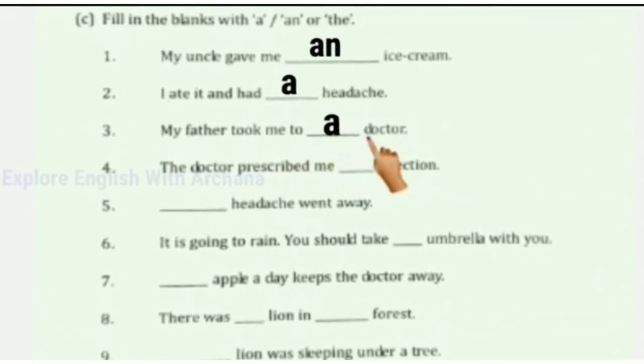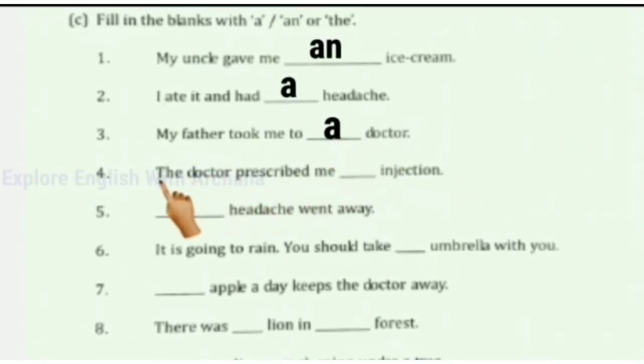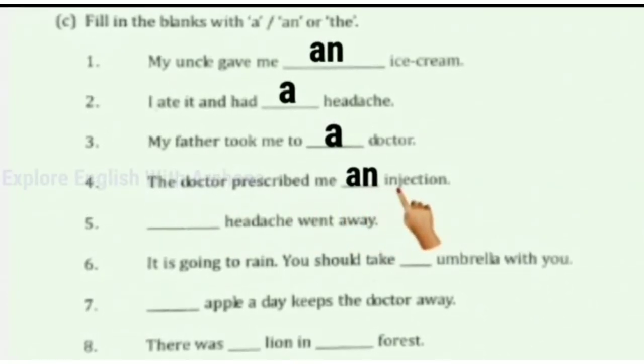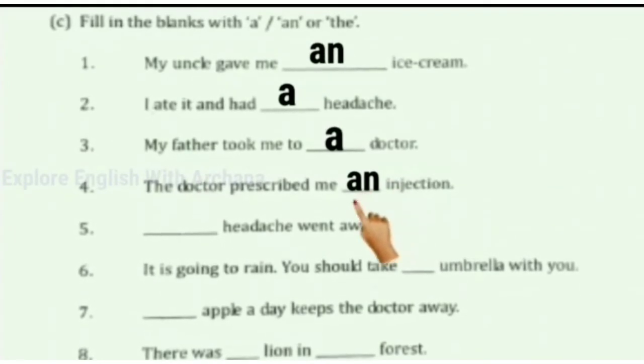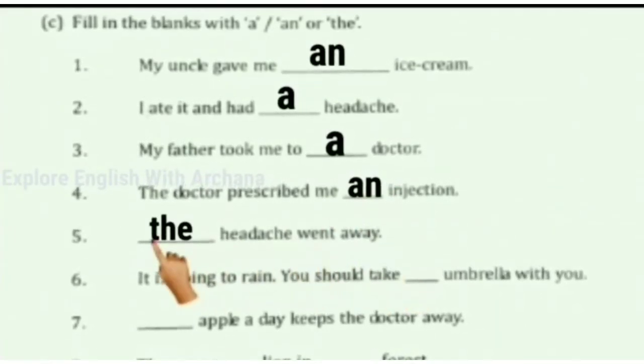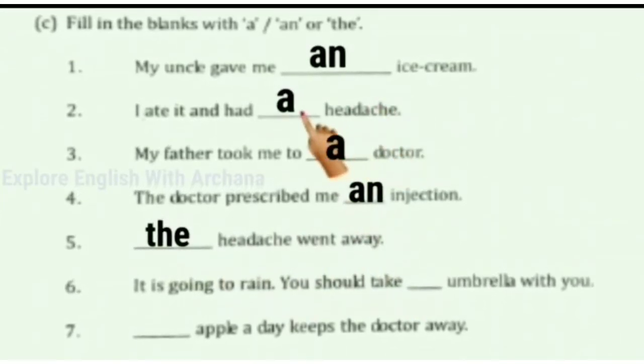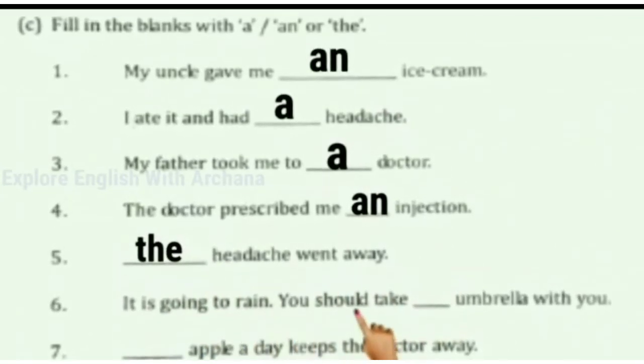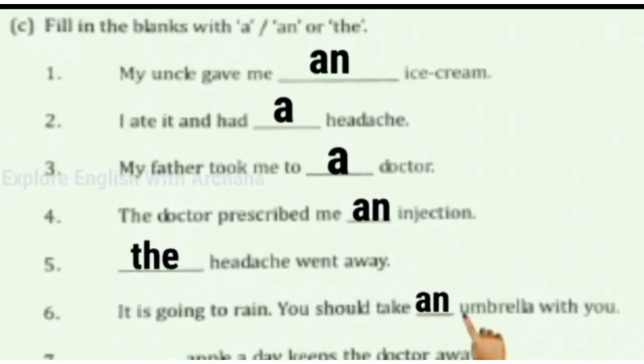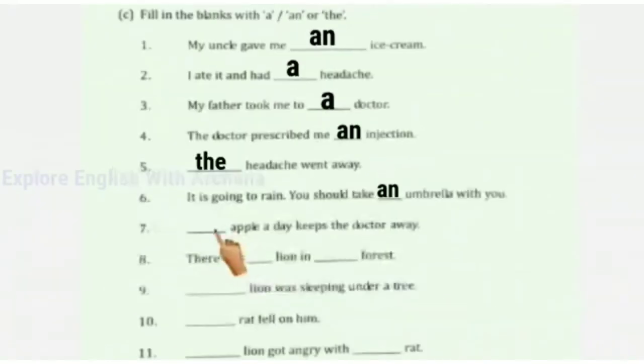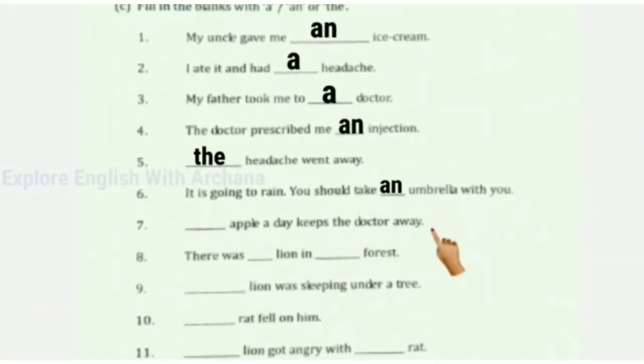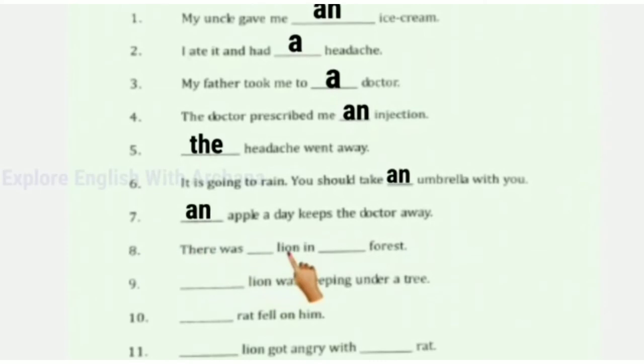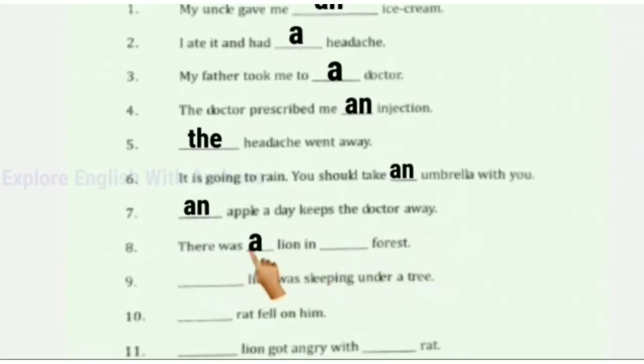The doctor prescribed me an injection. I is a vowel, so 'an'. The headache went away. We're talking about the specific headache mentioned earlier. It is going to rain, you should take an umbrella with you. U is a vowel, so 'an'. An apple a day keeps the doctor away.